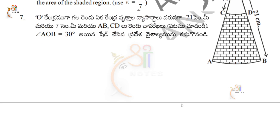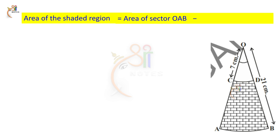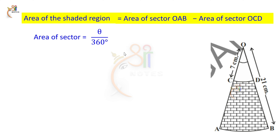So, the area of the shaded region is equal to the area of big sector OAB minus the area of small sector OCD. The formula for area of a sector is equal to theta by 360 degrees into pi R square. Here theta value is 30 degrees.